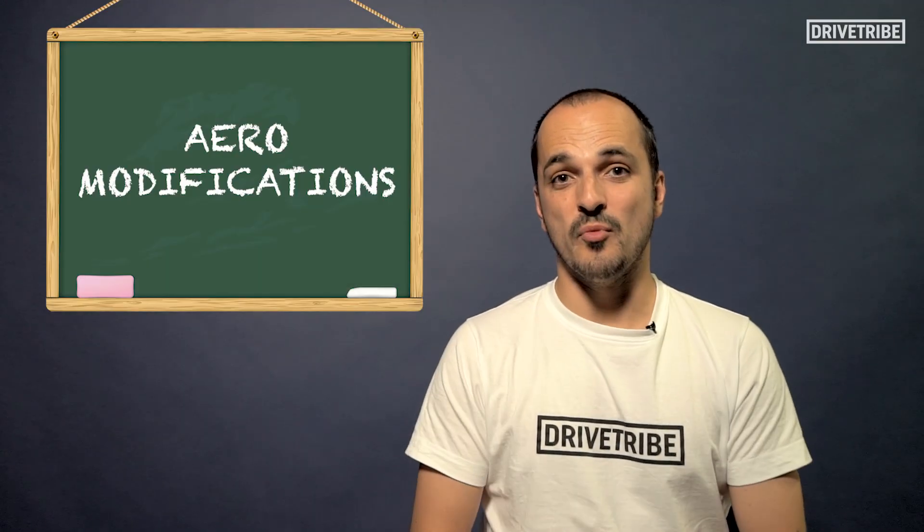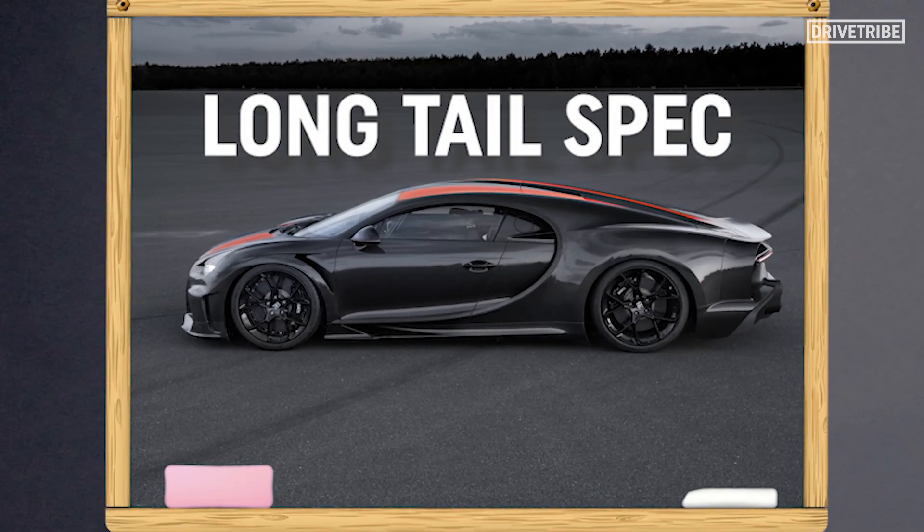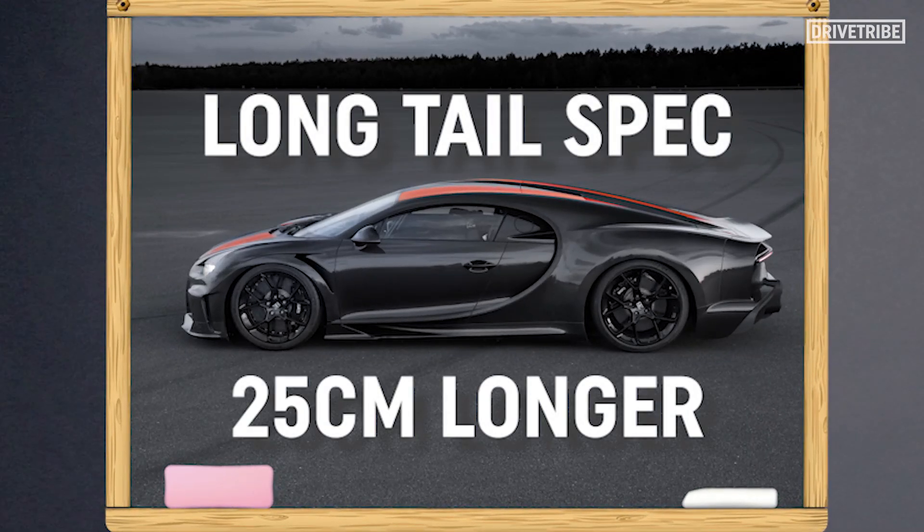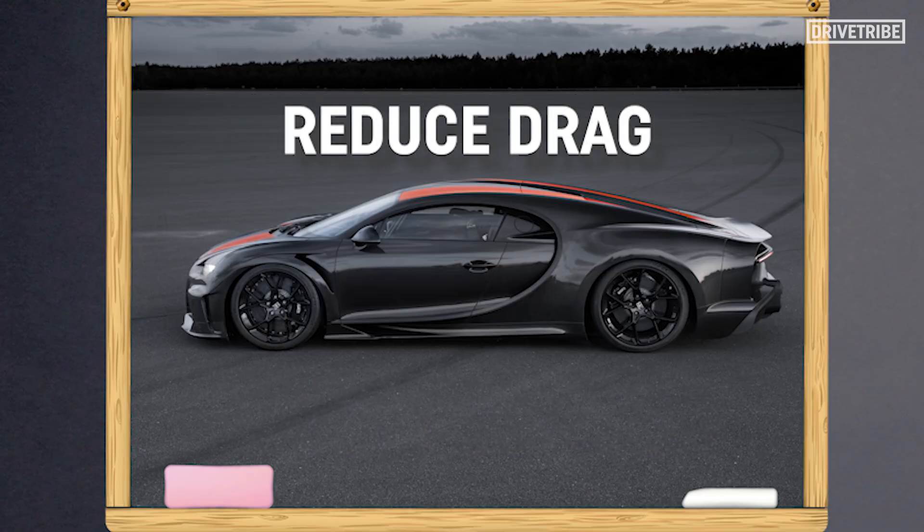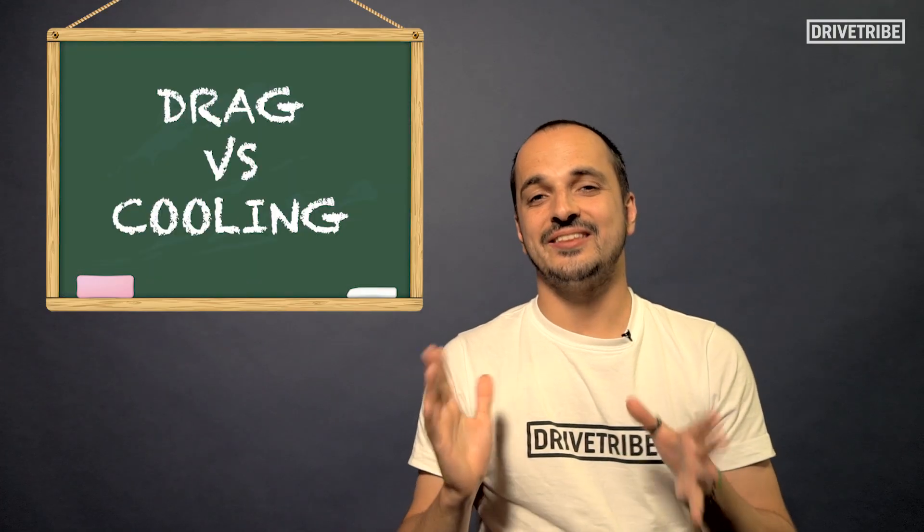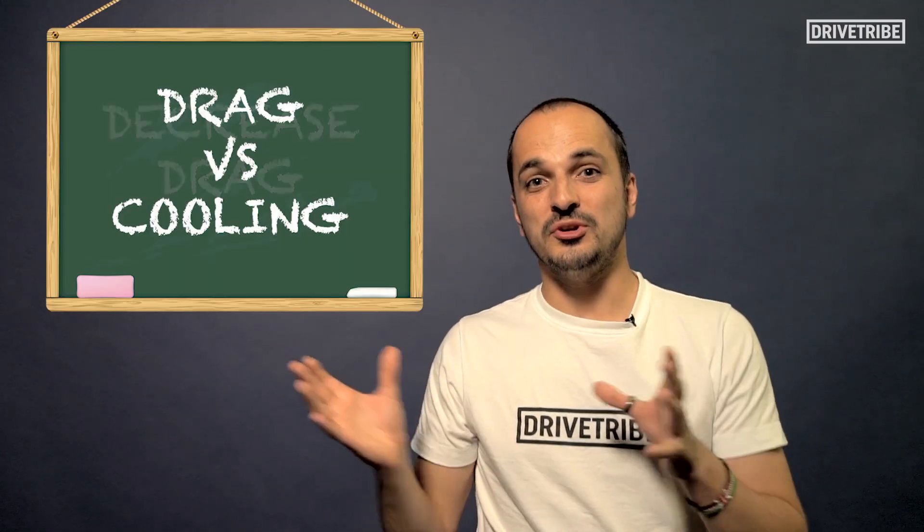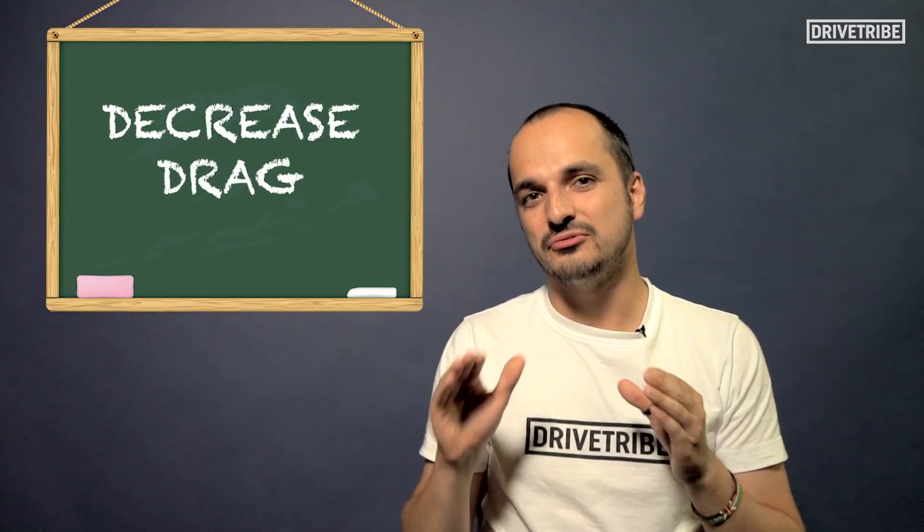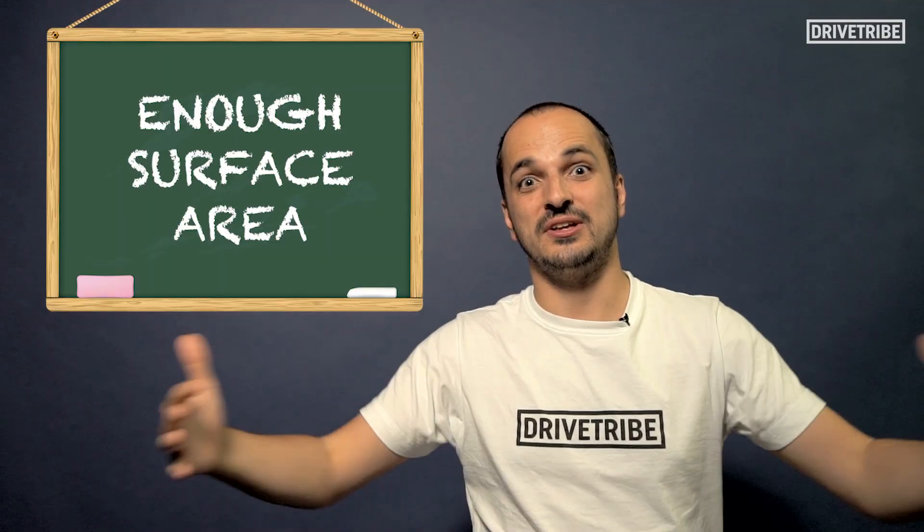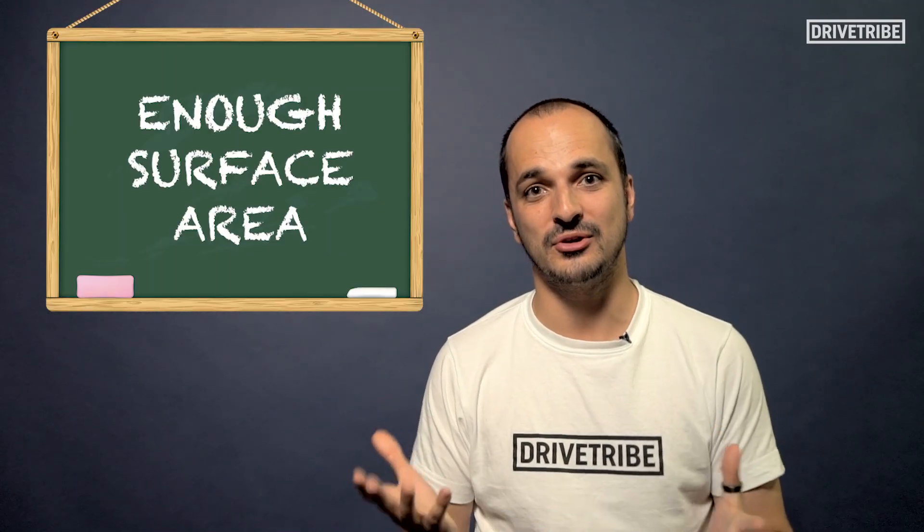Then come the aero modifications. This Chiron is essentially a long tail spec, seeing as it's 25 centimeters longer than the standard Chiron. This more aerodynamic design means that they can reduce drag and the aerodynamic efficiency of the car increases. In a car like the Chiron, you have to balance drag versus cooling. You want to decrease drag so the car can cut through the air, but you also want to have enough surface area so the air can be gulped into the car to feed that powertrain and keep it cool. So with this car, they will have had to have got that balance spot on.